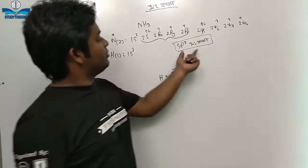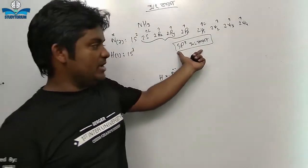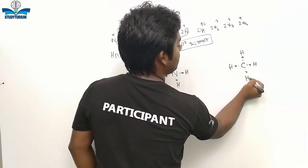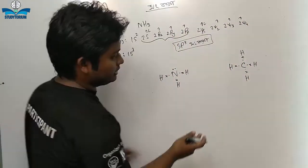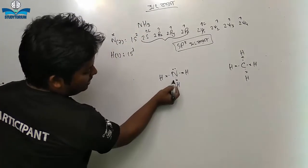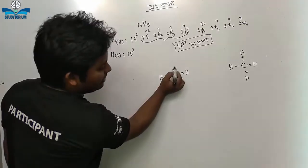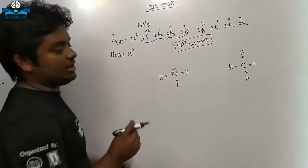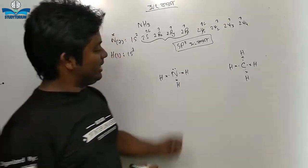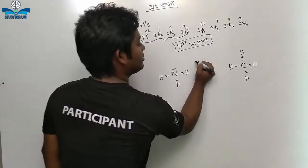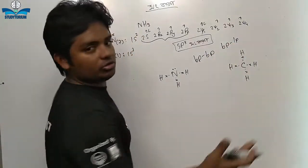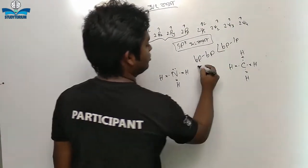So this is your first search. This is sp3 — bond pair, electron, electron. These are co-continuum pain bond pairs.